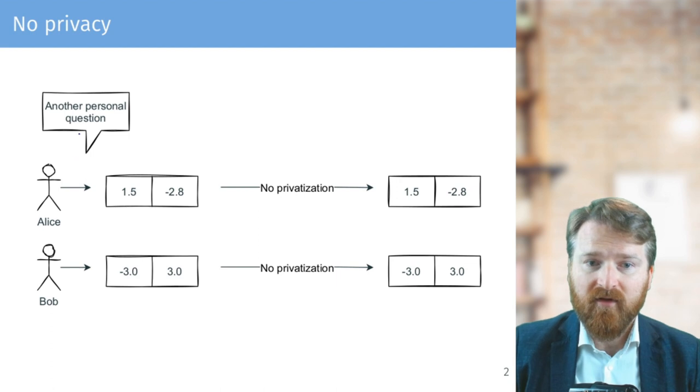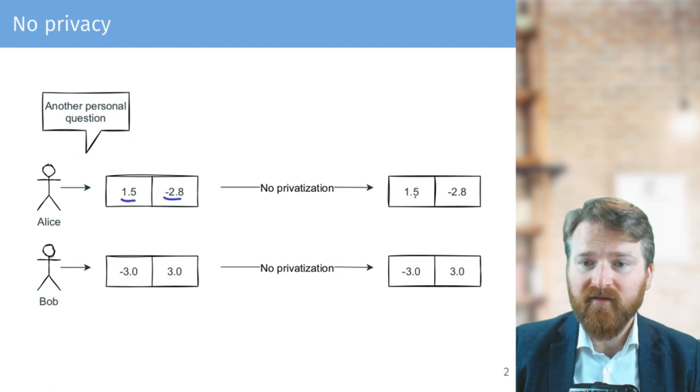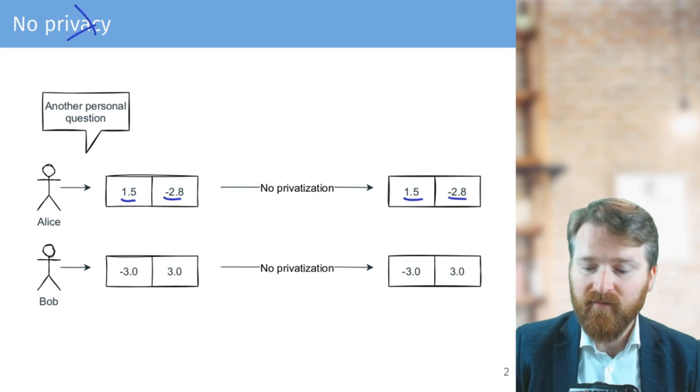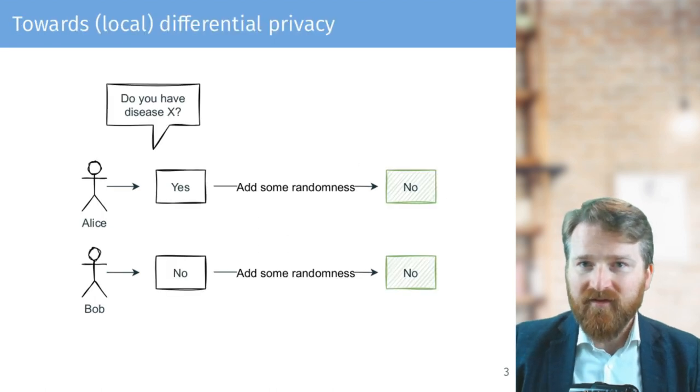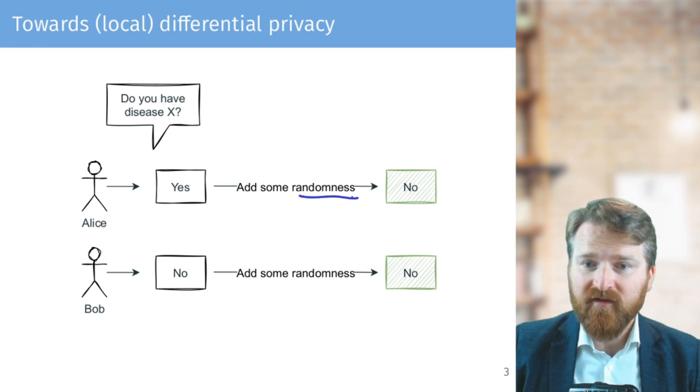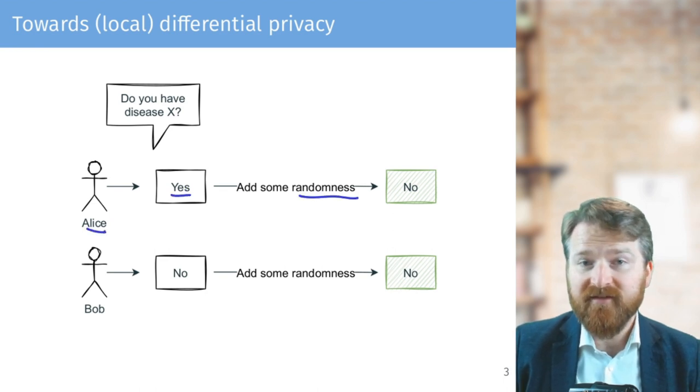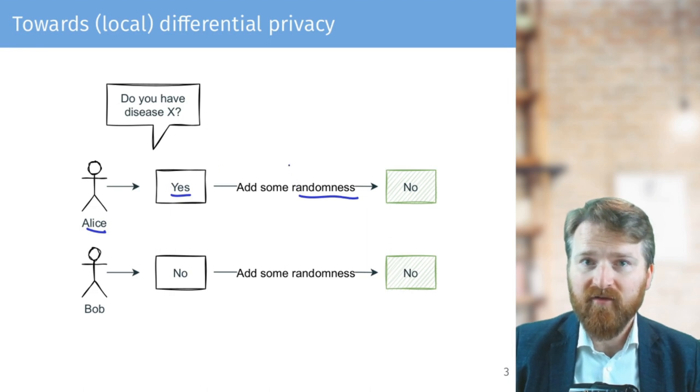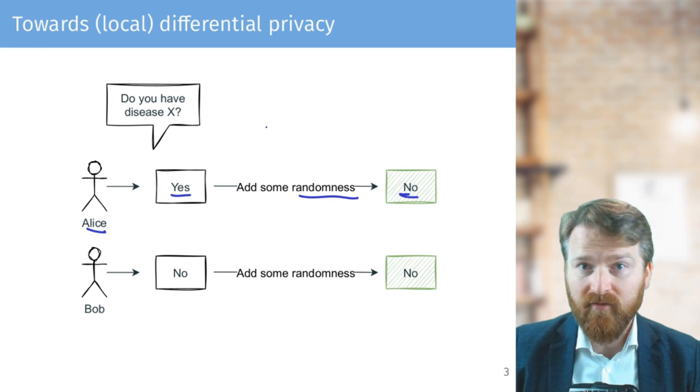We might also ask non-binary questions, so for example, a vector of real numbers. And again, with no privatization, we get basically the true answer, so we leak privacy. How can we start protecting privacy is to add some randomness in the process of answering. So for example, if the true answer of Alice is yes and she randomly tosses a coin, then the answer might be flipped and we get no. And this is what gives her some plausible deniability that the answer might be the true answer or it's the coin.